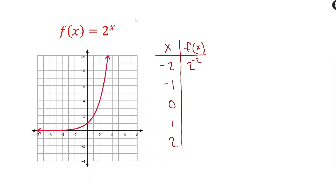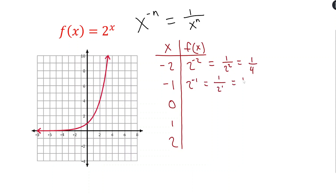Let's plug in negative 2 — we get 2 to the negative 2 power. This is a good review of negative exponent rules: x to a negative power is the same as 1 over x to that power but positive. So 2 to the negative 2 is 1 over 2 squared, which is 1/4. Similarly, 2 to the negative 1 is 1 over 2 to the first, which is 1/2. When we raise something to the 0 power it's 1 — not 0. Anything to the 0 power is 1.